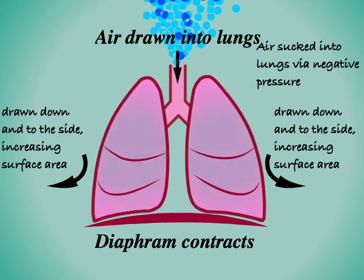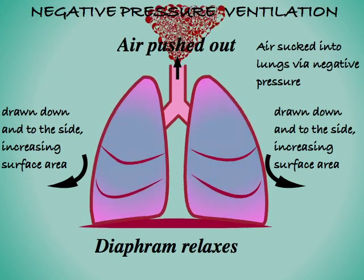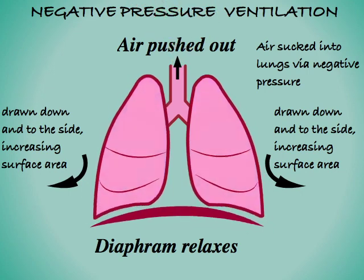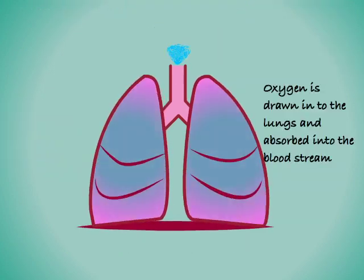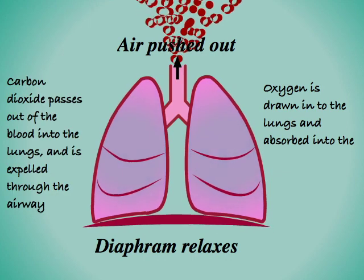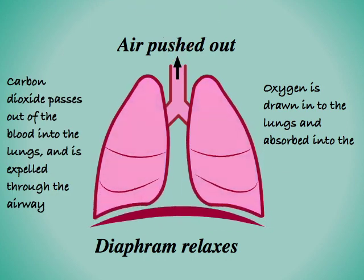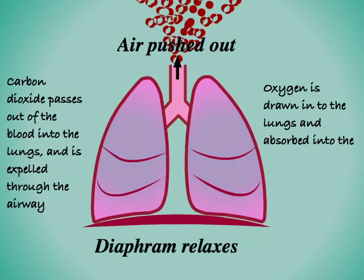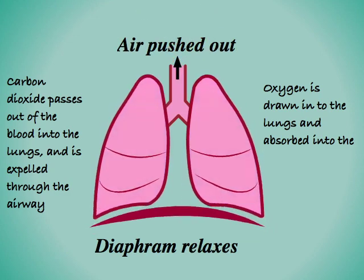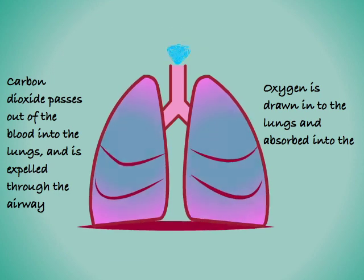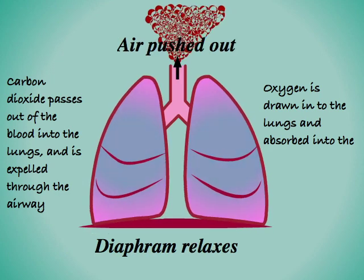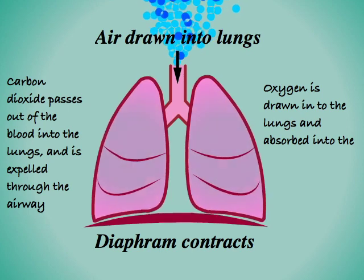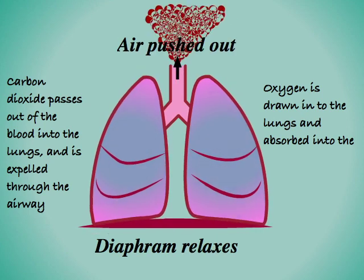We can therefore think of normal breathing as being driven by negative pressure. The oxygen is absorbed through the lining of the lungs into the bloodstream for the body to use. Carbon dioxide, a waste product produced when oxygen is broken down, heads the opposite direction, leaving the blood through the lining of the lungs. When the diaphragm relaxes, the lungs contract back to their previous place, pushing the air along with the carbon dioxide back out through the airway into the outside world.